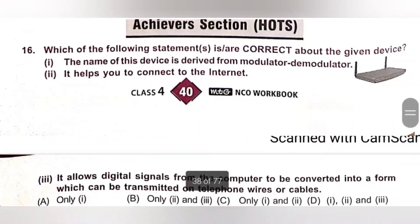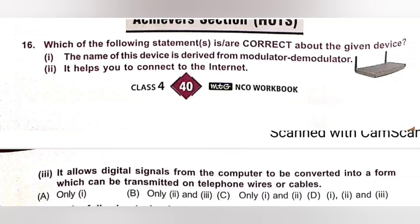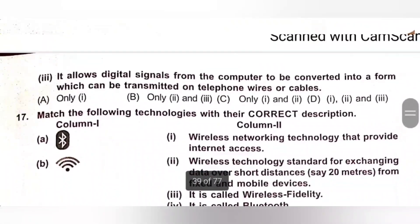Next, Achiever section. Sixteenth. Which of the following statements are true regarding the given device? One: the name of this device is derived from modulator and demodulator — the given device is modem, so statement one is true. Two: it helps you to connect to the internet — also correct. Three: it allows digital signals from the computer to be converted into a form which can be transmitted on telephone wires or cable — also correct. So one, two and three are all correct about modem. Option D is the correct answer.